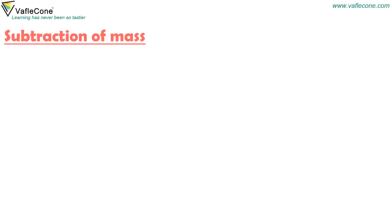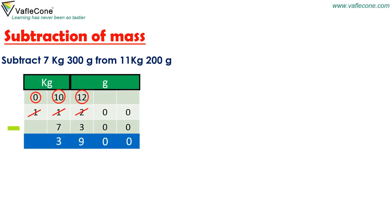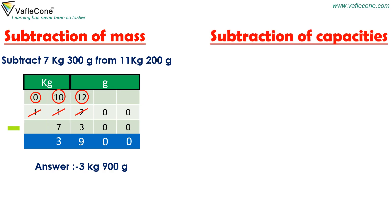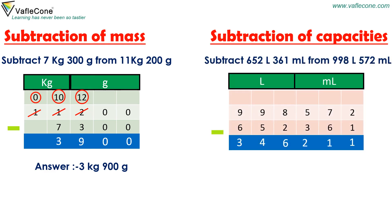Subtraction of mass. Subtract 7 kg 300 grams from 11 kg 200 grams. The answer is 3 kg 900 grams. Subtraction of capacities. Subtract 652 litres 361 millilitres from 998 litres 572 millilitres. The answer is 346 litres 211 millilitres.